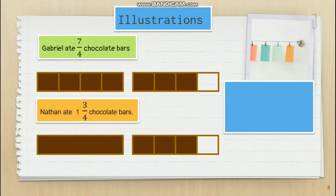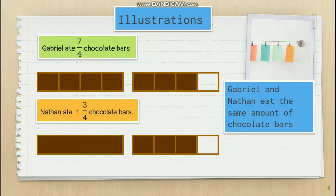Who do you think ate more? Both of them ate the same amount of chocolate bars, as shown in the illustration. From here, we could tell that an improper fraction can be changed to a mixed number without changing their value.